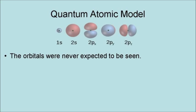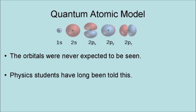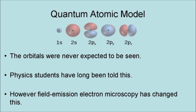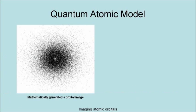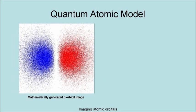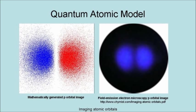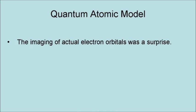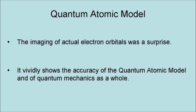The shapes of these orbitals were originally found mathematically. They have long been viewed as purely mathematical abstraction. The orbitals were never expected to be seen. Physics students have long been told this. However, field emission electron microscopy must change this. Here is a mathematically generated s-orbital image. Here is a field emission electron microscopy s-orbital image. Here is a mathematically generated d-orbital image. Here is a field emission electron microscopy d-orbital image. The imaging of actual electron orbitals was a surprise, but it visually shows the accuracy of the quantum atomic model and the quantum mechanics as a whole.